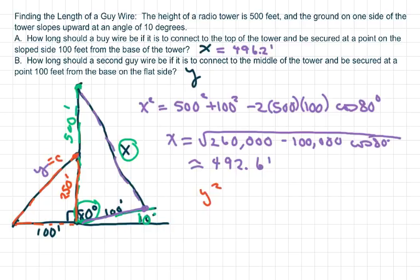So I'm just going to do Y squared equals 100 squared plus 250 squared, or Y equals the square root of all that.